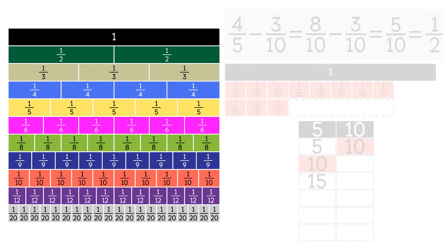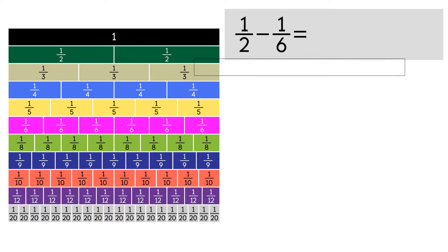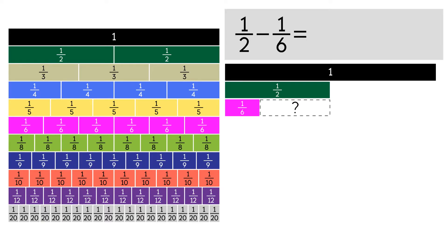Let's do another example: 1 half minus 1 sixth. We're going to use the 1 as a benchmark. Place the 1 half strip underneath the 1, then we put a 1 sixth strip under the 1 half. The empty space is our difference. To find the difference, we need a common denominator.